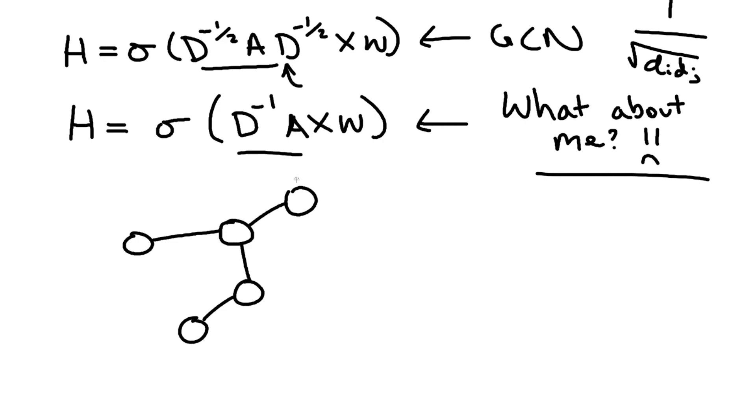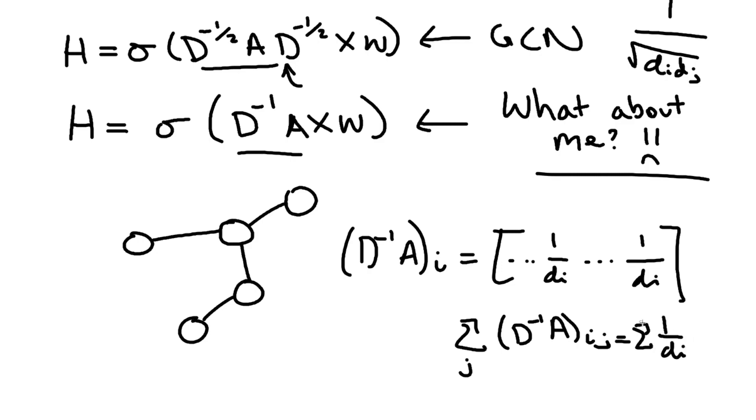This d inverse a is actually an operator which is very related to random walks over graphs. The form of d inverse a will look like, if we focus on a single row, something like one over di and so on. Actually there will be di of these one over di's. So if we sum over this d inverse a over all the j elements, we'd be pretty much just getting a bunch of one over di's, and we'd be getting di of them. This would equal one, so these rows sum to one.